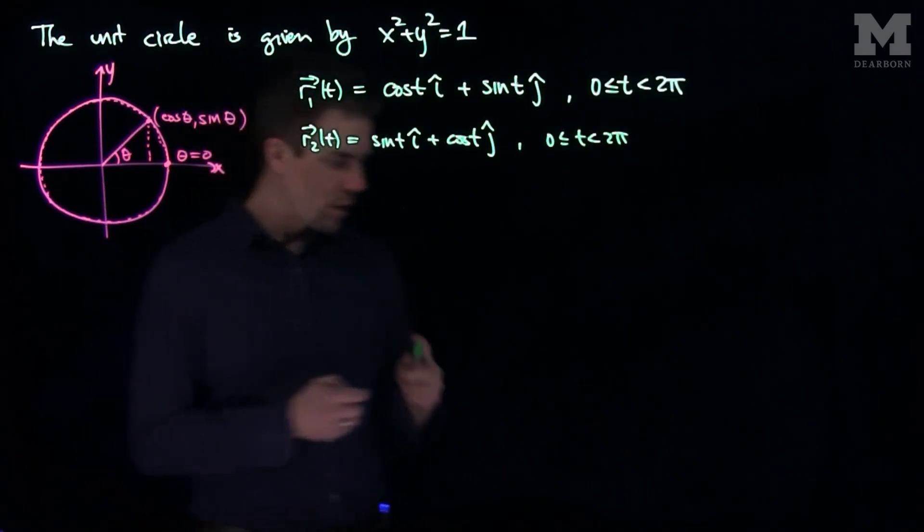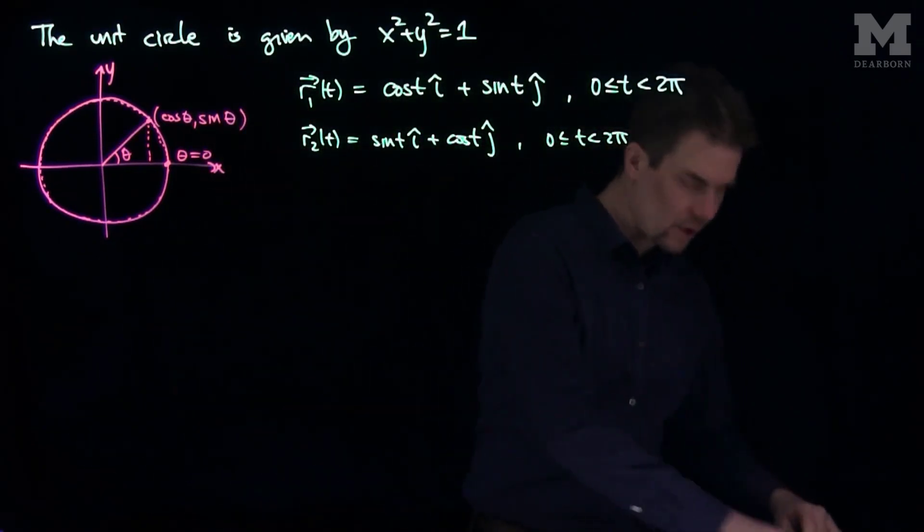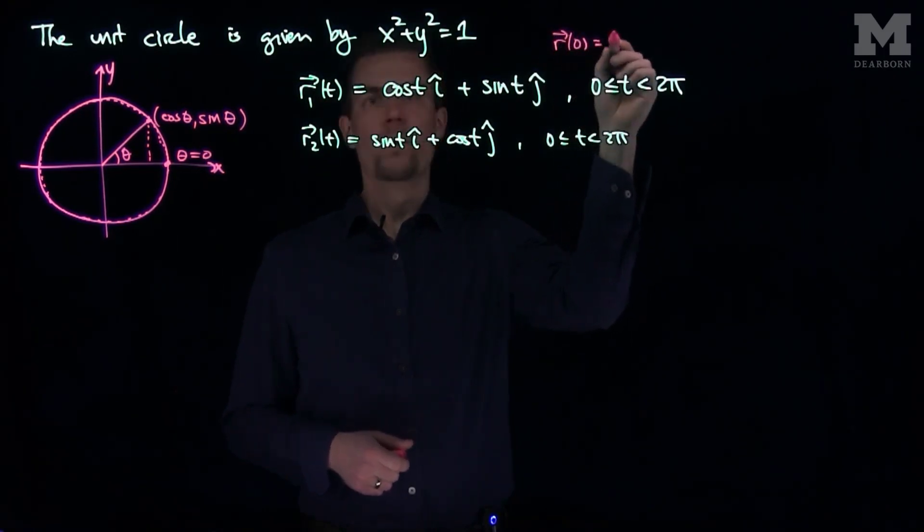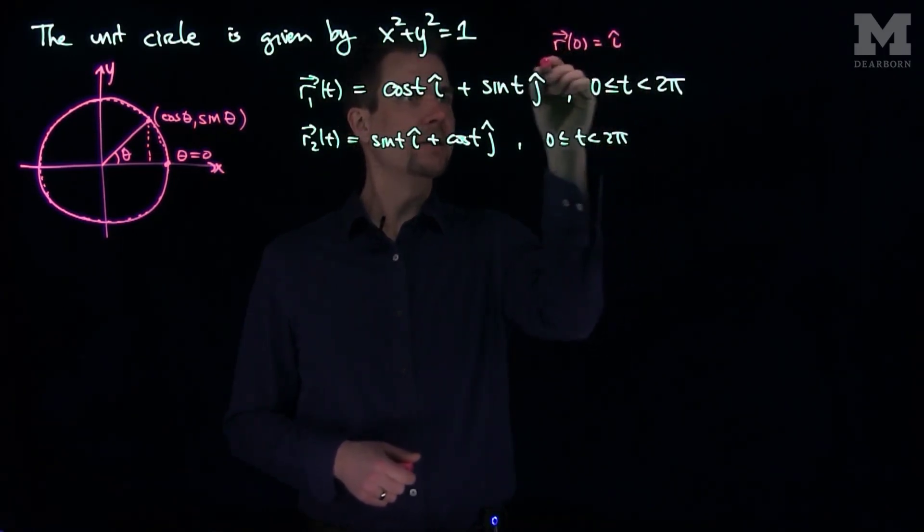So for example, what does r1 look like? So if we look at r1(t), if I plug in 0 to this, we get to i hat for r1.